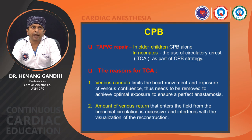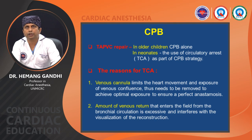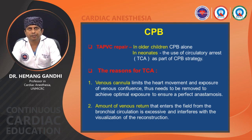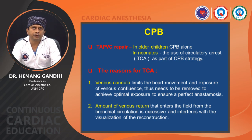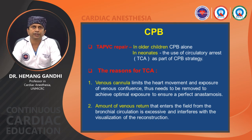In CPB management, for TAPVC repair in older children, cardiopulmonary bypass alone is usually sufficient. But in neonates, total circulatory arrest is sometimes used as a CPB strategy, because the venous cannula limits heart movement and exposure of the venous confluence — it needs to be removed to achieve maximum exposure for a perfect anastomosis. Additionally, the amount of venous return from bronchial circulation entering the field is excessive and interferes with visualization of the reconstruction of the common chamber with the left atrium.